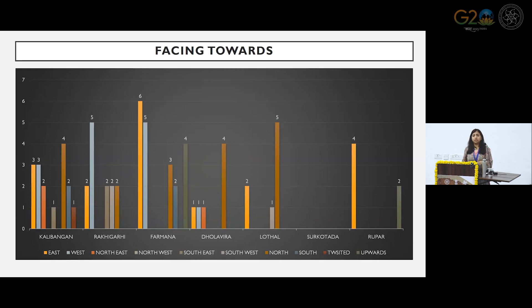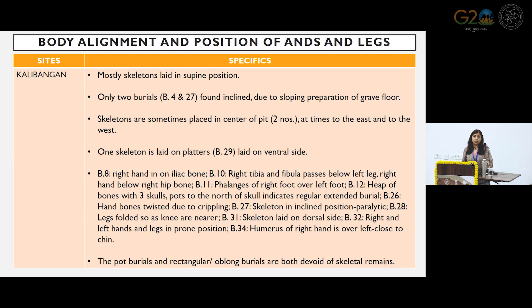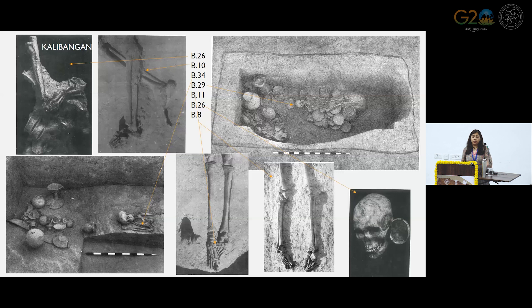Facing direction shows a bit of mixed data. Mostly the burials have been seen facing east-west or placed straight north. From the body alignment and positioning of hands and legs, certain ideas have emerged. For example, in the site of Kalibangan, examples of legs being crossed, or phalanges kept on each other or pointed towards each other have been seen. And in burial number 34, both hands have been brought towards the chin — mentioned in the excavation report as purposely placed there — but no other similar type has been found from this particular site.